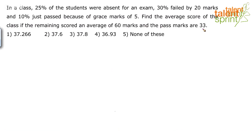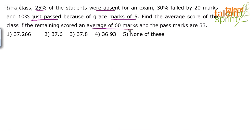Now, that's an interesting one. It says in a class, 25% of the students were absent for an exam. 30% of the students failed by 20 marks and 10% just passed because of grace marks of 5. We have to find out the average score of the whole class if the remaining scored an average of 60 marks and the pass marks are 33.